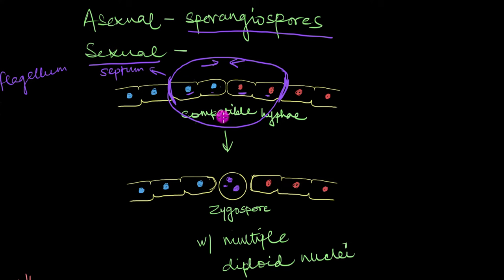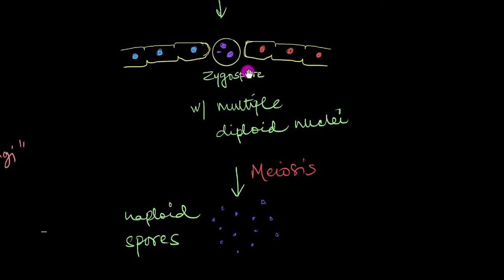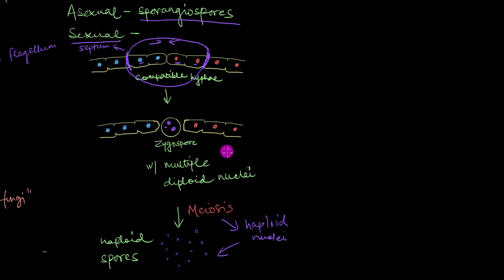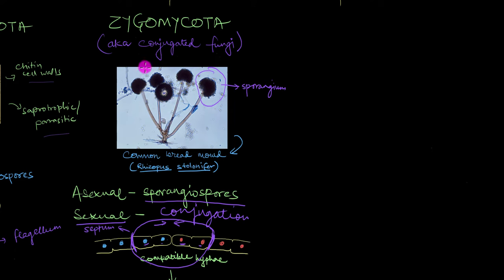Now what happens after this, this zygospore will eventually undergo meiosis. And because of meiosis, this diploid nuclei will become haploid nuclei. And each of these haploid nuclei will separately become a haploid spore. And that is how, through sexual reproduction, these haploid sexual spores are formed. Now this type of sexual reproduction where the tips of the hyphae fuse together to give this zygospore, which eventually gives us haploid spores, this entire process is called conjugation. And because of this conjugation process, zygomycetes are often referred to as conjugated fungi.